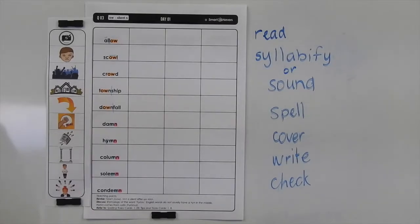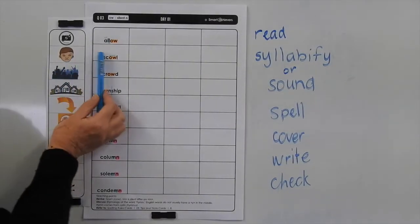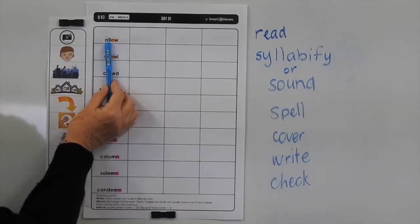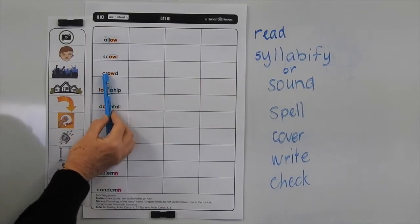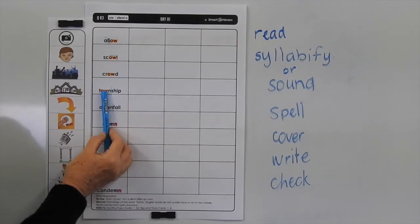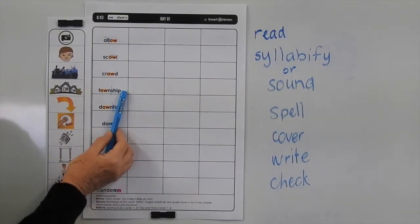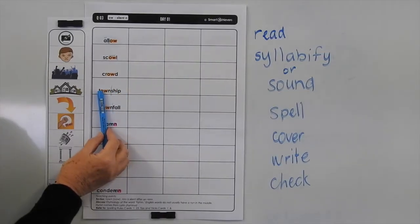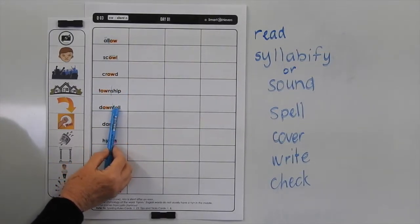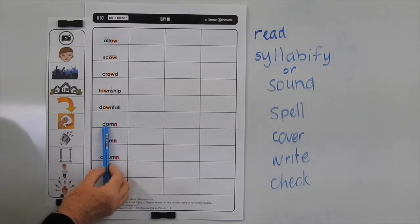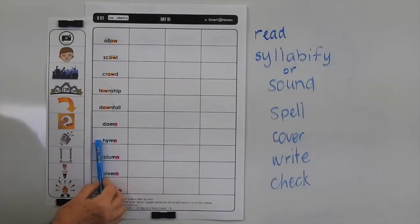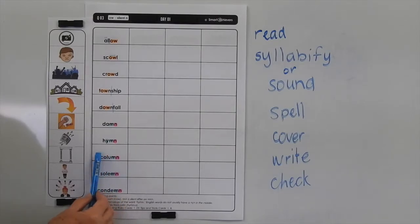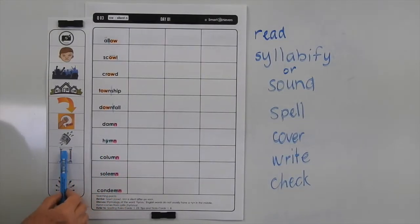So let's go back and have a look at what these words mean. Allow means that you can do something — you have permission for it. A scowl is a look of dislike. A crowd is a large group of people. A township is a group of houses and shops, not as big as a city, and we often see them scattered through the countryside. A downfall is a failure of some kind. Damn is an expression used when something goes wrong. A hymn is a song commonly used in a church service — it's a religious song.